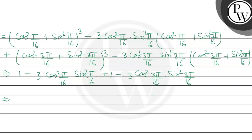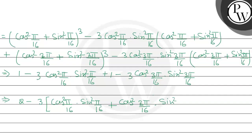Now, 1 plus 1 will be 2. If I take 3 common, this will be 2 minus 3 times (cos² π/16 times sin² π/16 plus cos² 3π/16 times sin² 3π/16).